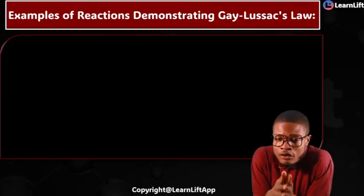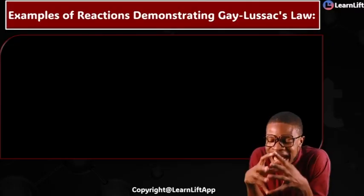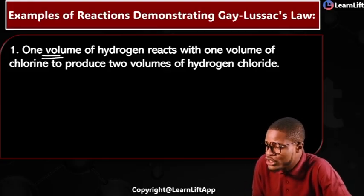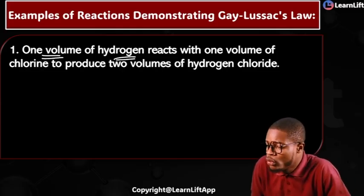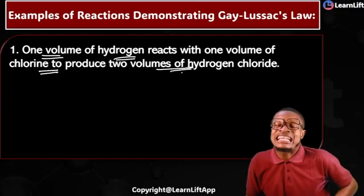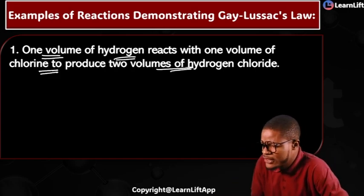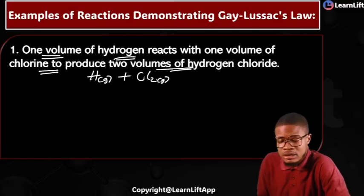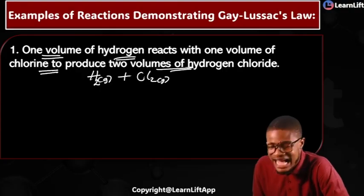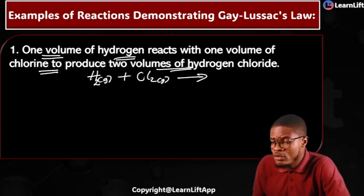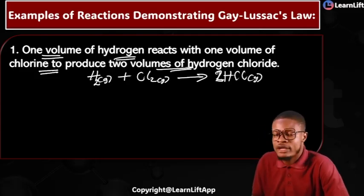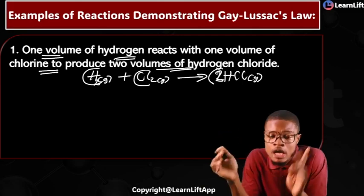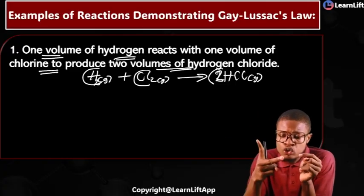Let's look at reactions that demonstrate Gay-Lussac's Law. Example one: one volume of hydrogen reacts with one volume of chlorine to produce two volumes of hydrogen chloride gas. The reaction is H₂(g) + Cl₂(g) → 2HCl(g). Hydrogen is diatomic, chlorine is diatomic — two atoms of hydrogen, two atoms of chlorine, giving two molecules of HCl. One volume of H₂ plus one volume of Cl₂ gives two volumes of HCl.